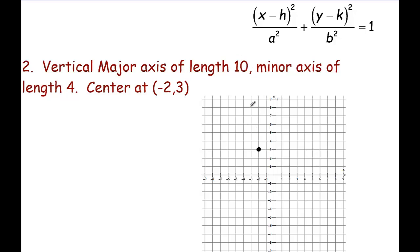Well to know really what that's saying is that means from the center you're going to count up half that distance to a vertex. So 1, 2, 3, 4, 5, and then half that distance down to the other vertex, 1, 2, 3, 4, 5.